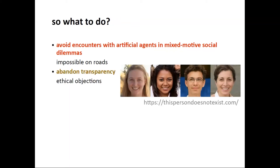Another option is abandoning transparency — hiding AI behind a human face in our interactions. So for a self-driving car, put tinted windows on it, remove all indicators that it's a self-driving car, and everybody will think there are humans inside. We might then continue to cooperate with them in traffic. That's a workable solution, but it will obviously have lots of ethical objections — is it okay not to disclose to a human that they're interacting with a machine when they in fact are?